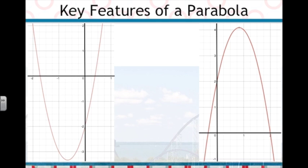It can have a low point and open upward like the one on the left, or it can have a high point and open downward like the one on the right. There are four key features of the parabola.